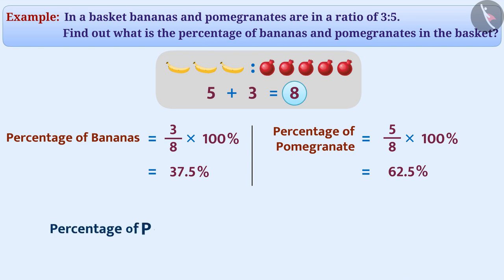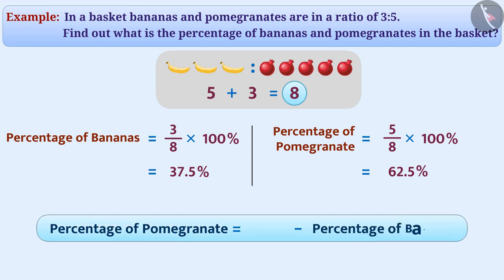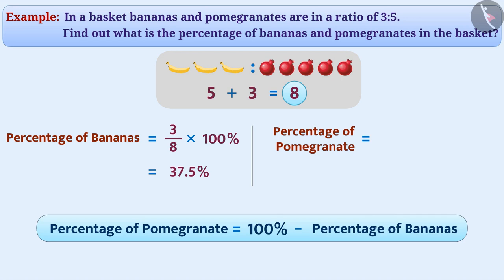We can also get the percentage of pomegranate by subtracting the percentage of bananas from 100%. That is, the percentage of pomegranate is equal to 100% minus 37.5% is equal to 62.5%.